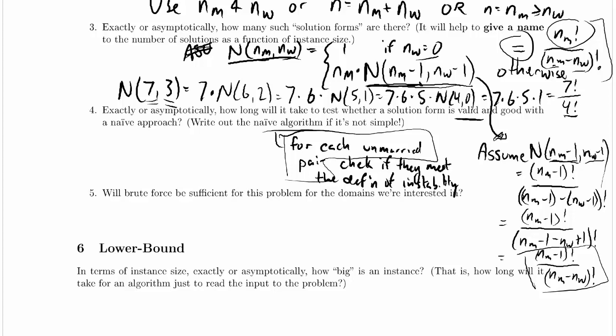So how many unmarried pairs are there? There are number of men times number of women minus number of women, which is NM minus 1 times number of women married pairs. So this will take NM minus 1 times NW of these check steps, which should take constant time.